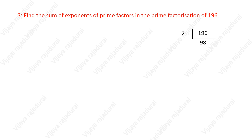196 divided by 2 gives 98. 98 divided by 2 gives 49. 49 divided by 7 gives 7.